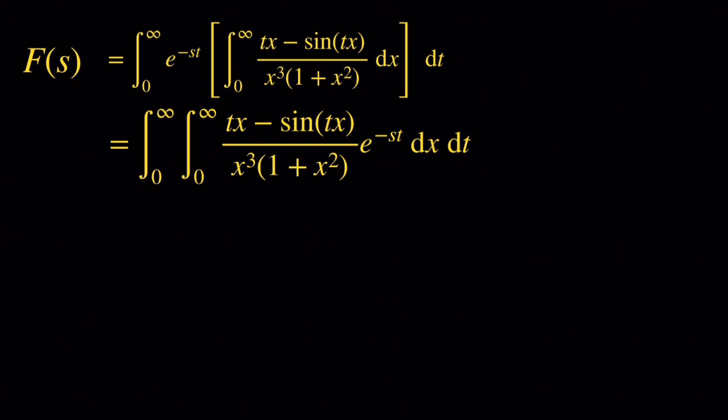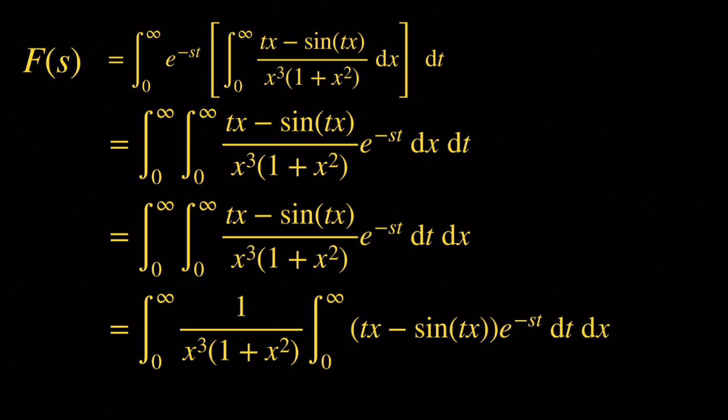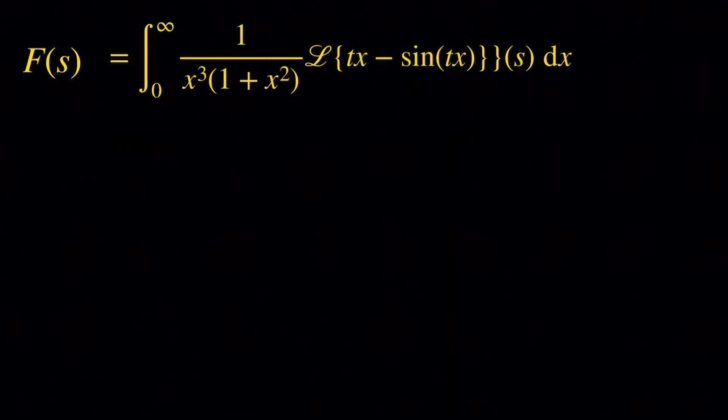If we take the limit of the integrand as x goes to infinity we get zero, and if we take the limit of the integrand as t goes to infinity we get zero, provided that the real part of s is greater than zero. So assuming the real part of s is greater than zero, the integrand is bounded, and therefore we can apply Fubini's theorem. Applying Fubini's theorem, we can integrate with respect to t first and then with respect to x. The integral from 0 to infinity of tx minus sine of tx times e to the negative st dt is just the Laplace transform of tx minus sine of tx.